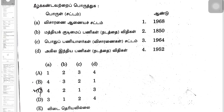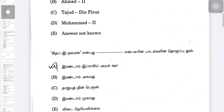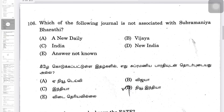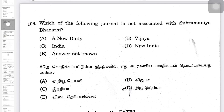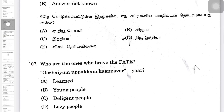Let's see the first question. The options are: 1952, 1850, 1968, 1964. The question is: which of the following journals is not associated with Subramaniya Bharathi? Options include New India.